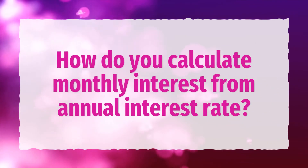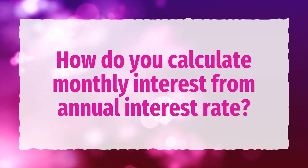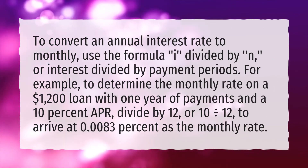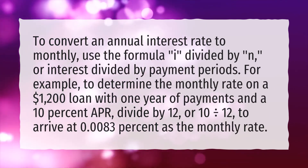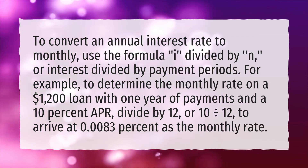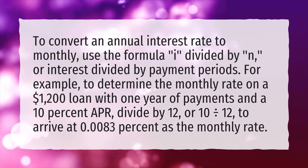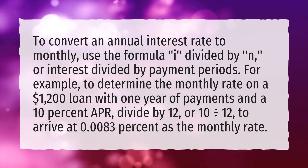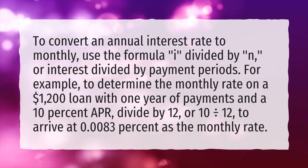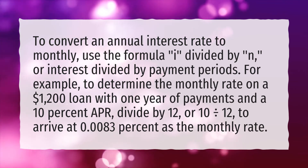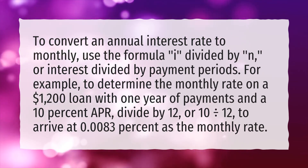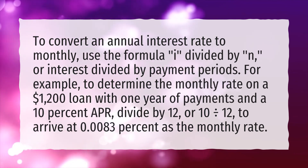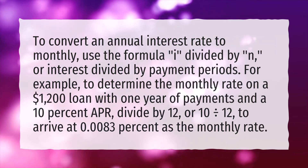How do you calculate monthly interest from an annual interest rate? To convert an annual interest rate to monthly, use the formula I divided by N, or interest divided by payment periods. For example, to determine the monthly rate on a $1,200 loan with one year of payments and a 10% APR, divide by 12 — or 10 divided by 12 — to arrive at 0.0083% as the monthly rate.